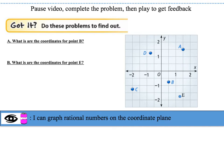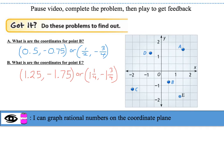Now let's look at the answers for letters A and B. For letter A, point B is (0.5, −0.75), or in fraction form, (½, −¾). For letter B, the correct coordinates for point E are (1.25, −1.75), or in fraction form, (1¼, −1¾).